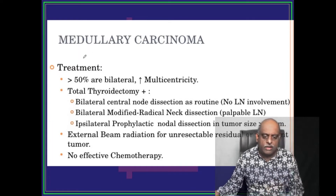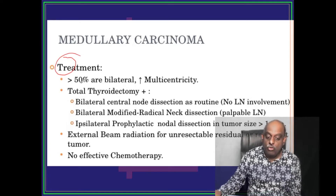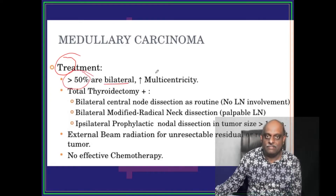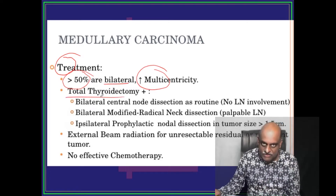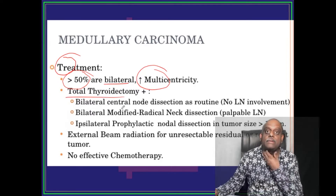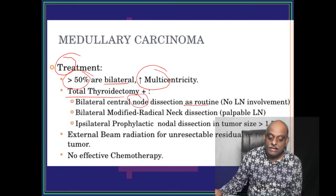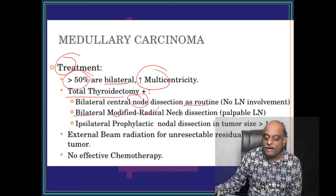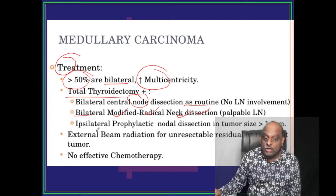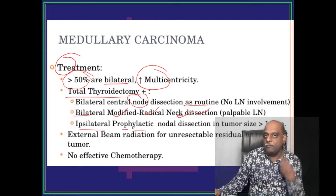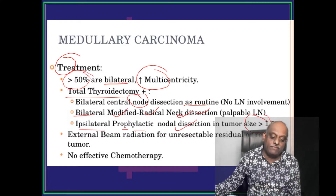How do you treat medullary carcinoma? — one of the favorite questions of the examiner. More than 50 percent are bilateral and show increased multicentricity. Treatment is total thyroidectomy plus bilateral central node dissection as a routine. If there is a palpable lymph node, total thyroidectomy plus bilateral modified radical neck dissection. If the tumor size is more than 1.5 centimeters, add ipsilateral prophylactic nodal dissection.